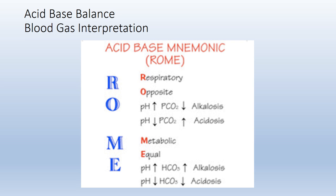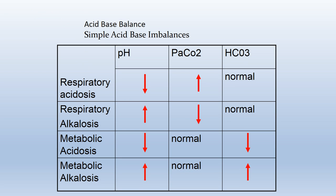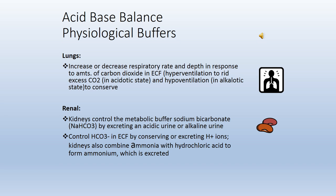Respiratory alkalosis is when pH is high and PaCO2 is low. The body compensates through the lungs (by increasing or decreasing respiratory rate) and the kidneys (by excreting or retaining bicarbonate) to maintain pH balance. When CO2 is low, patients are blowing off too much CO2 — seen in anxious or hyperventilating patients. The lungs regulate the acid component through the rate and depth of breathing; the kidneys can produce or excrete bicarbonate as needed.